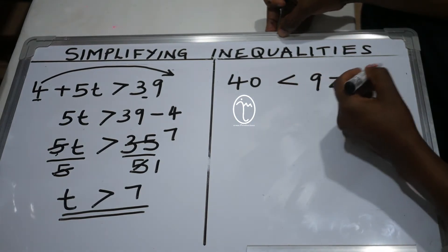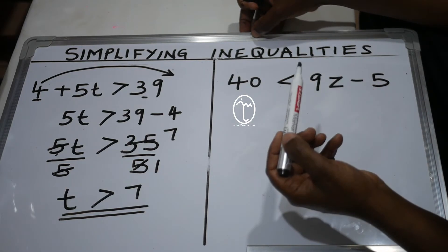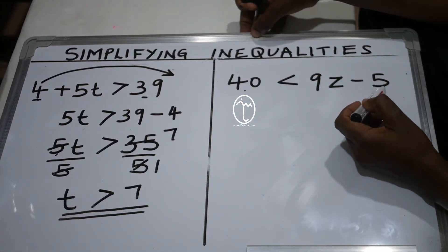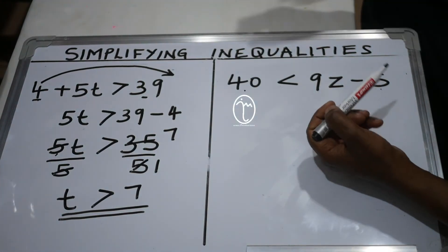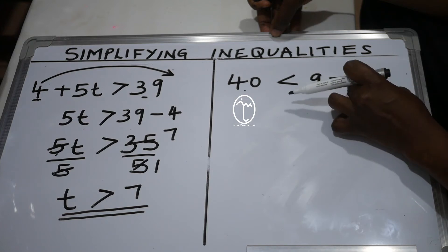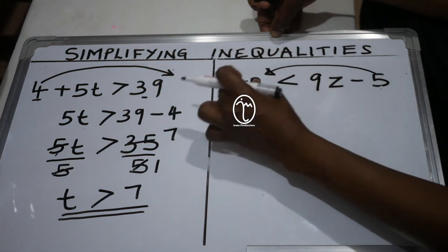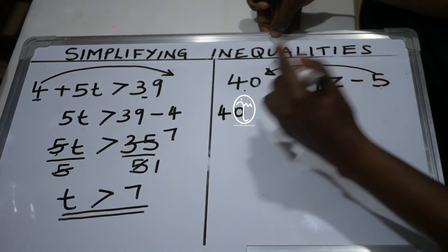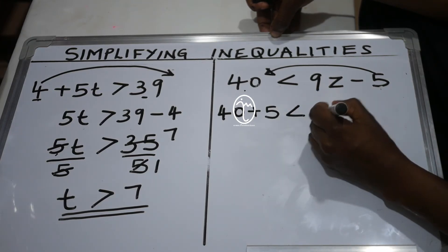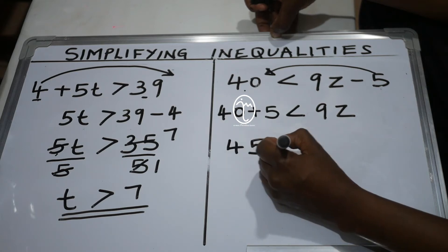Now: 40 is less than 9z minus 5. The like terms are 40 and negative 5 — the numbers without letters. The lesser number is negative 5. We move negative 5 to where 40 is. Since it is negative, as it moves to the other side it becomes positive. So on the left side we have 40 plus 5, and on the right we are left with 9z. Combining: 45 is less than 9z.